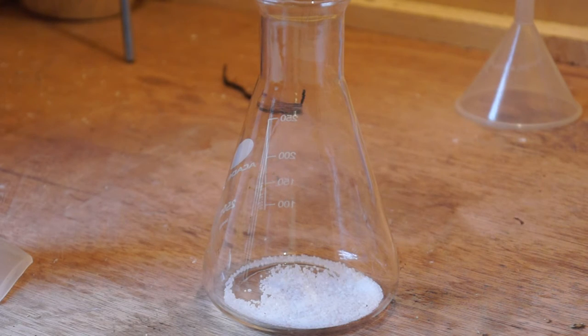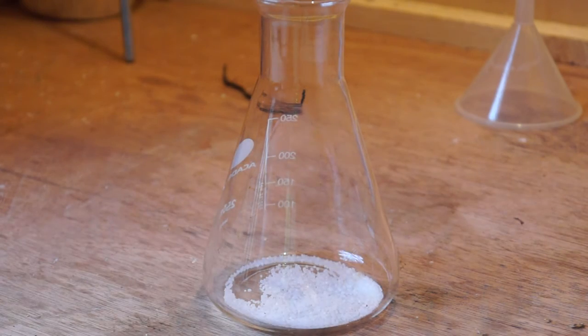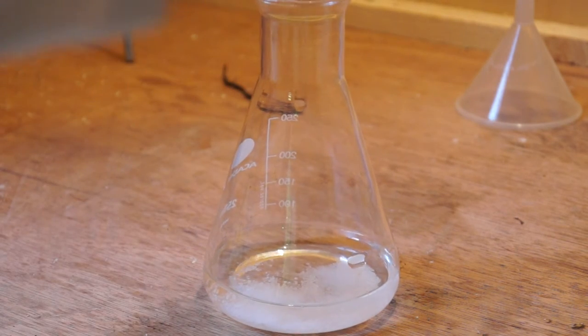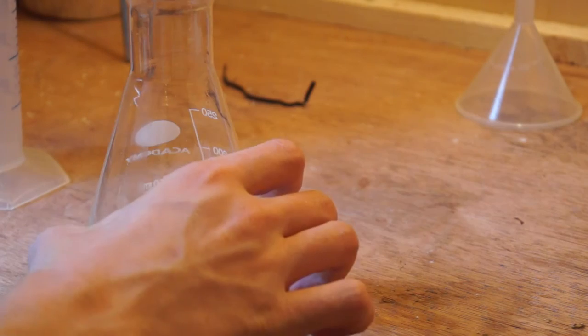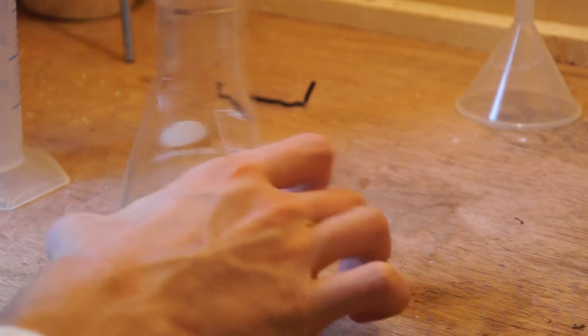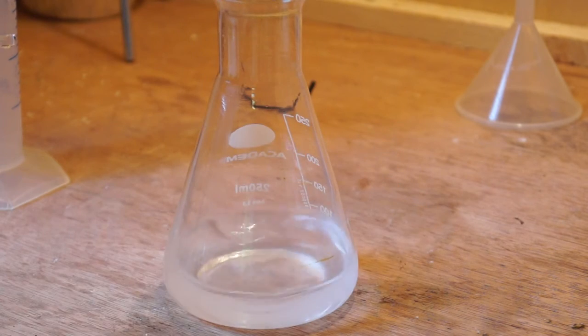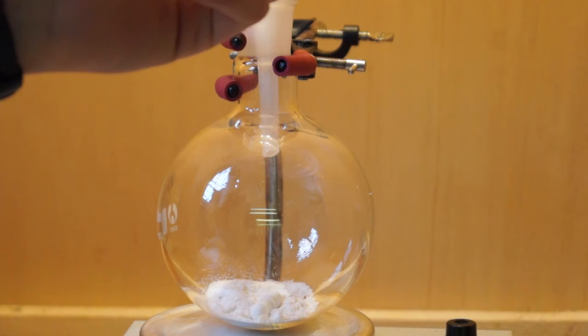First, I calculated that for the 7.5 grams of aspirin I had, I would need 5 grams of sodium hydroxide to completely hydrolyze the aspirin molecule. This was calculated using the stoichiometric equation. I then prepared a 2.5 molar solution of sodium hydroxide by dissolving 5 grams of pure sodium hydroxide in 50 ml of deionized water.